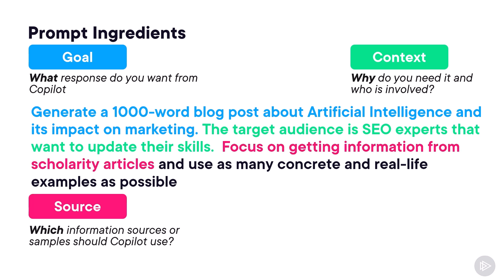We then have the source, where I'm telling Copilot to focus on getting information from scholarly articles. If you do not specify the source, Copilot will get that information from all over the web, which can be fine for many use cases. But for my use case here, I don't want information from maybe a third-party vendor that has a tool about AI and marketing — I want Copilot to focus on scholarly articles only.